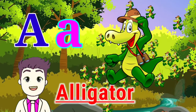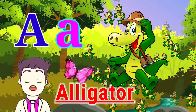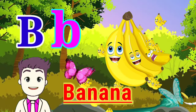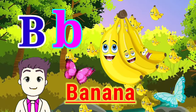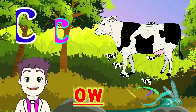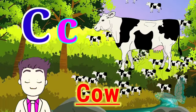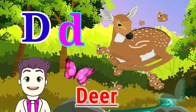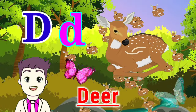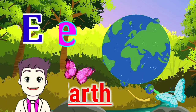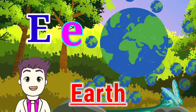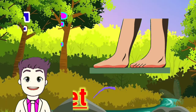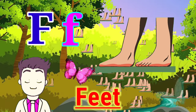A for alligator. B for banana. C for cow. D for deer. E for earth. F for feet.